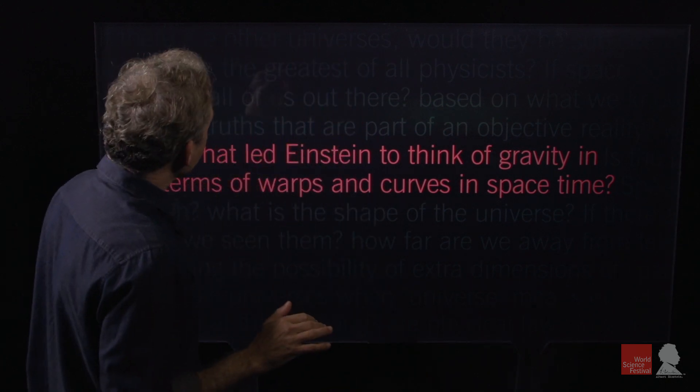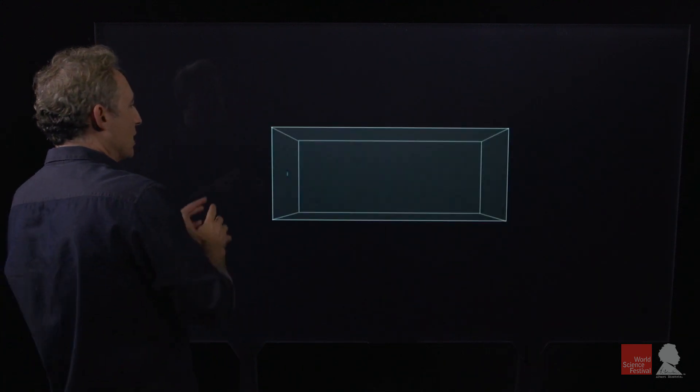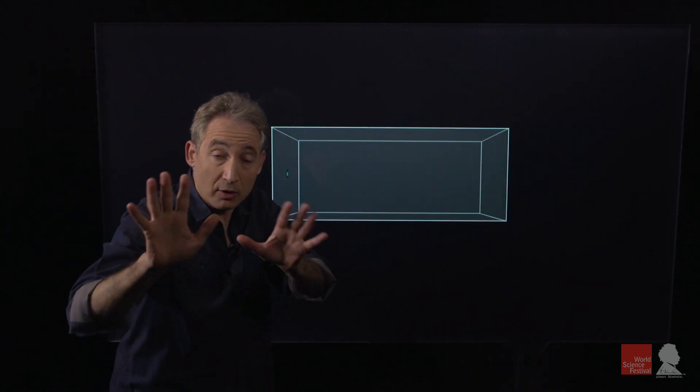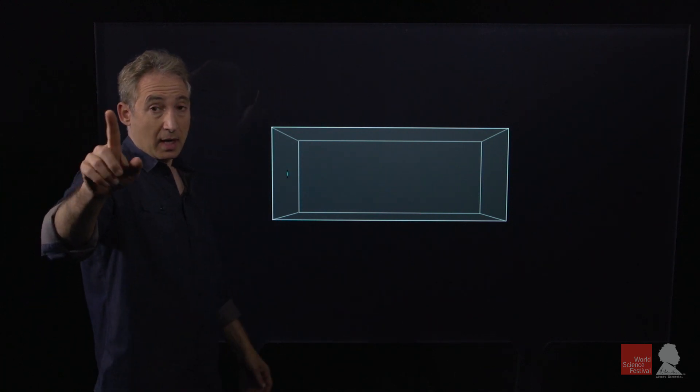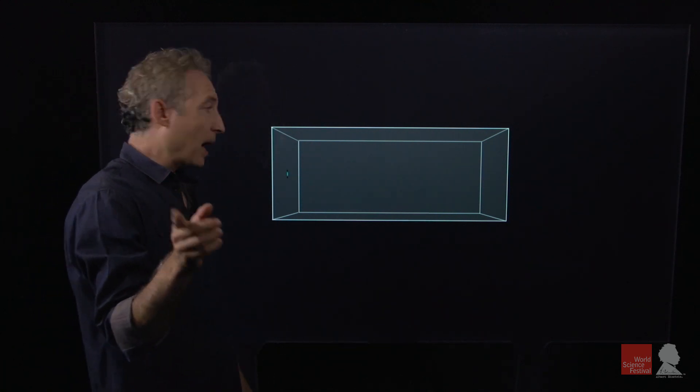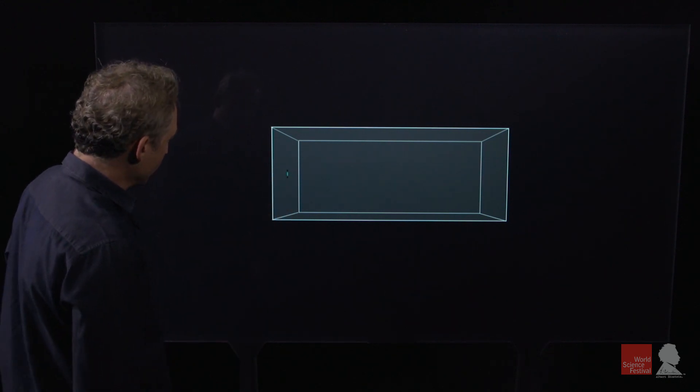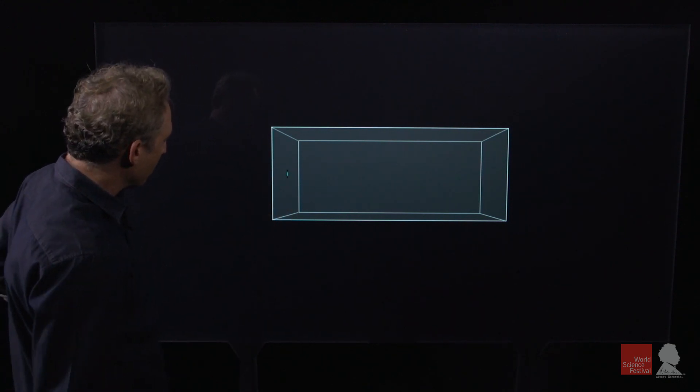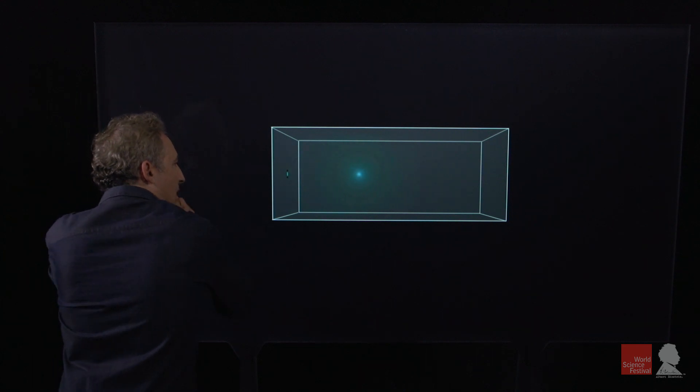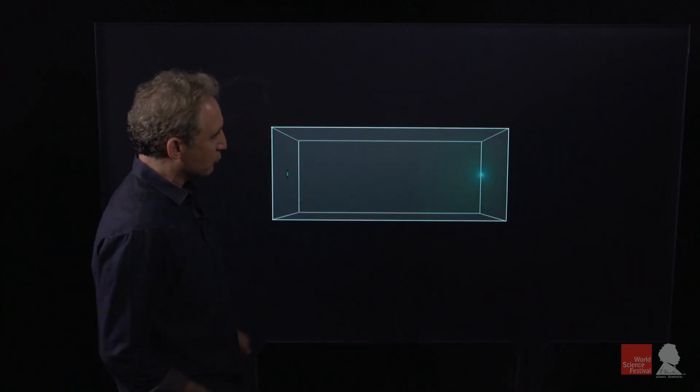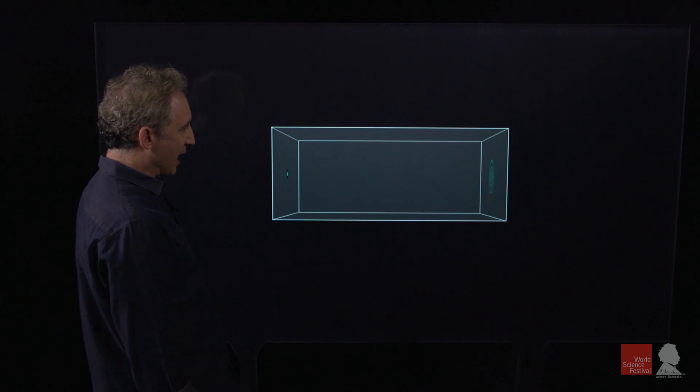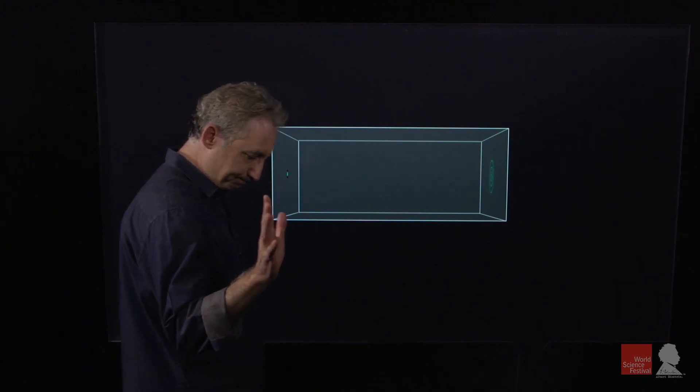Imagine that we have a box that is freely floating in outer space. No gravity at all, and imagine that you were inside the box freely floating around and you see there's a laser on that wall and you push the laser turning it on. What will happen? Well you know the laser light will fire out and go in a perfectly straight line trajectory to the other side of the box. Good.